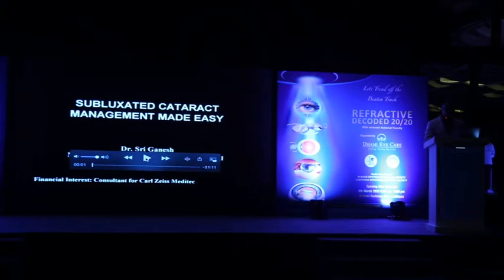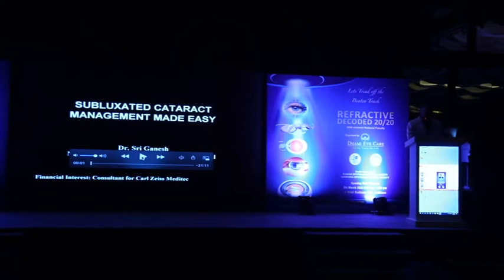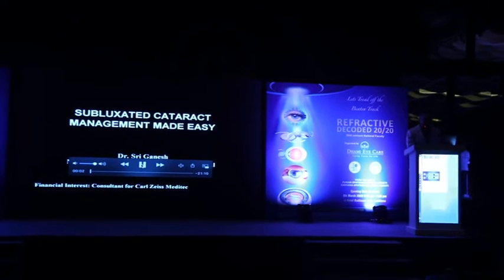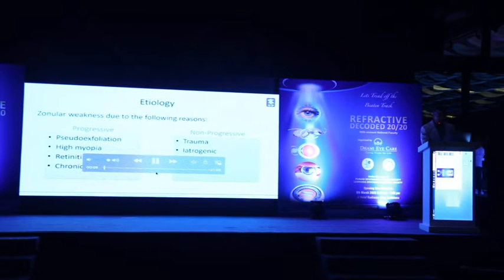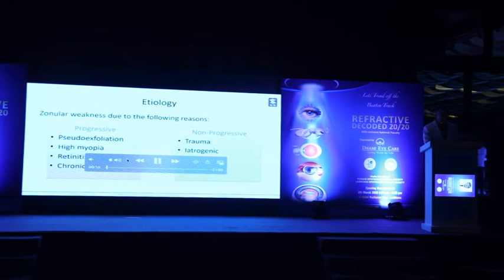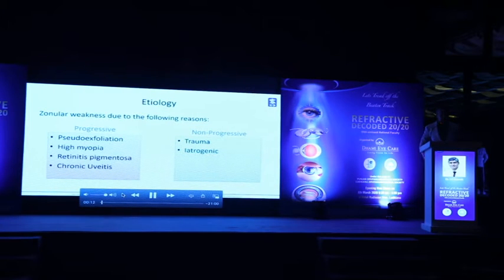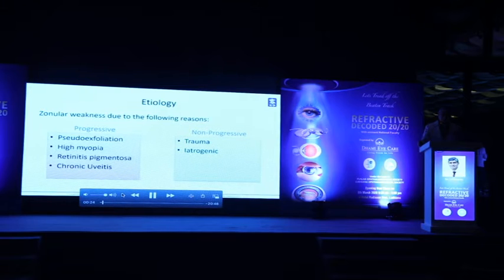Let's look at some cases of subluxated cataracts and how management has changed. Subluxated cataracts involve zonal weakness, either progressive or non-progressive. Progressive causes include pseudo-exfoliation, high myopia, retinitis, fibromontous, or chronic uveitis. Non-progressive causes can be traumatic or iatrogenic, including intraoperative.